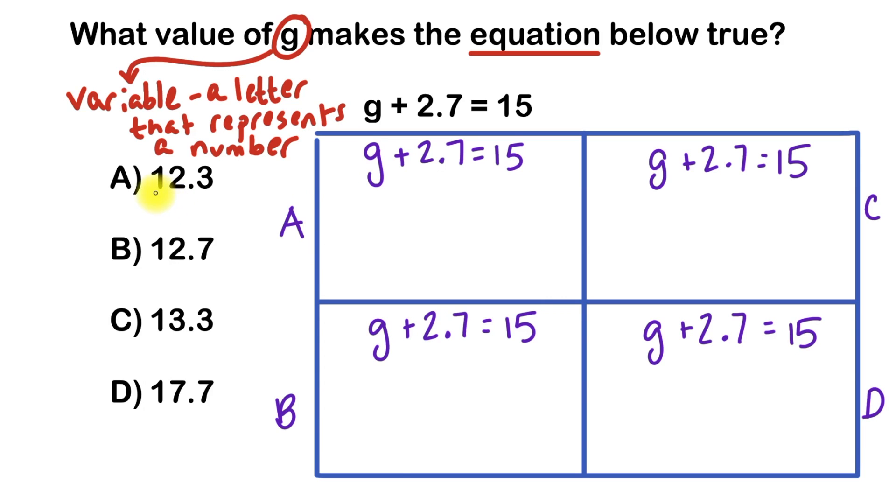So let's try out choice A, 12.3. So if we're saying that G represents 12.3, then that just means wherever I see G, instead of writing G, I'll write 12.3. So G in choice A would be 12.3 plus 2.7.